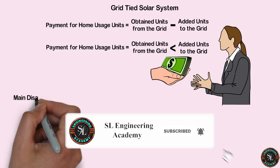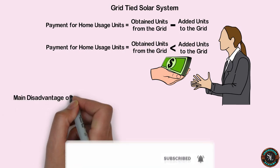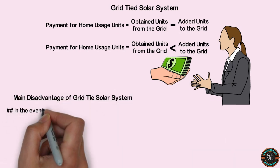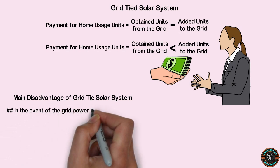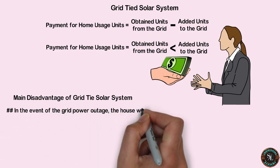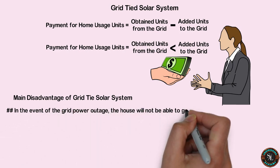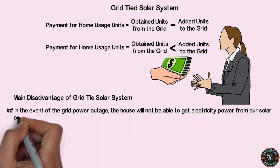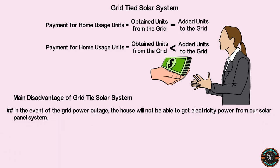Let's see the main disadvantage of this system. In the event of a grid power outage, the house will not be able to get electric power from the solar panel system.